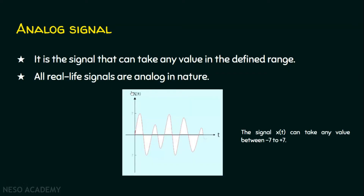This is an example analog signal, and this analog signal is continuous in nature. The signal x(t) is on the y-axis and time is on the x-axis. The signal x(t) can take any value between minus 7 and plus 7. Between point A and point B, there can be infinite values, and if we have infinite values in the defined range, then we call this signal an analog signal.